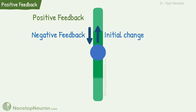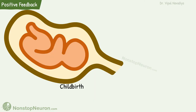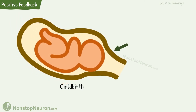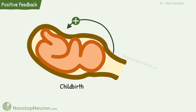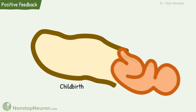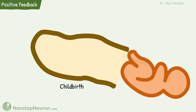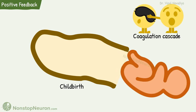There are also some positive feedback control systems. In this, change in the parameter is further intensified rather than balancing it. For example, uterine contractions during childbirth. Contraction of uterus pushes the baby through the cervix. Stretching of the cervix sends signals to the uterus to produce even more powerful contractions. This positive feedback makes the uterine contraction more and more powerful. When this process becomes powerful enough, the baby is born. Another example of positive feedback is activation of some clotting factors during coagulation cascade.